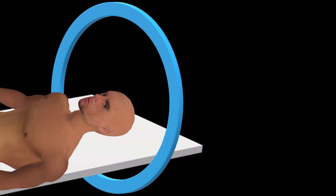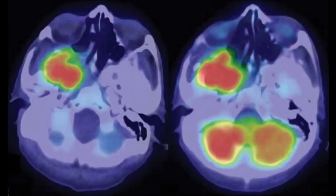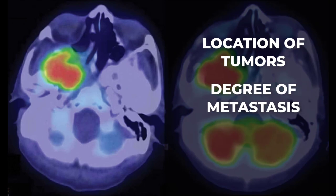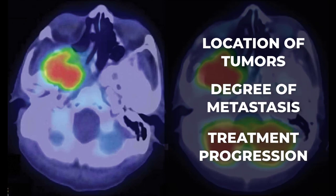For example, because cancer cells are normally more active than normal tissue, cancer cells appear brighter. Therefore, scientists use this method to detect the location of cancerous tumors, if any spread has occurred, and determine how well a treatment is working.